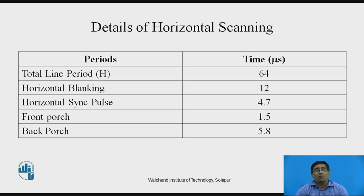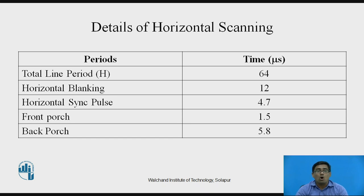The horizontal scanning details are summarized in a table showing periods and times in microseconds: total line period is 64 microseconds, horizontal blanking is 12 microseconds, horizontal sync pulse is 4.7 microseconds, front porch requires 1.5 microseconds, and back porch requires 5.8 microseconds.